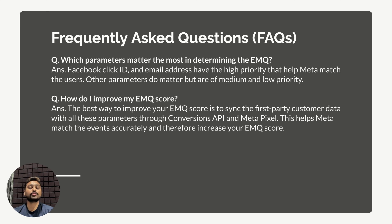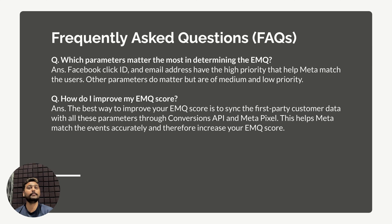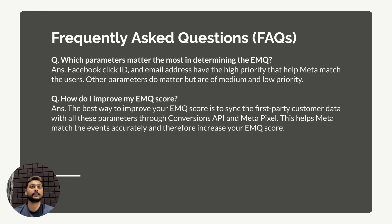Third question: which parameters matter most in determining my EMQ? Facebook clearly states in their documentation that email ID is given high priority, and the Facebook click ID (FBC) is given high priority. All other parameters like Facebook login ID, browser ID, country, region, and postal code are given medium or low priority. Focus on sending high-priority and medium-priority parameters. If you don't have low-priority data, that's fine, but send it if you have it. When sending email ID, hash it using the SHA-256 algorithm before sending — Facebook documents clearly specify what should and should not be hashed.